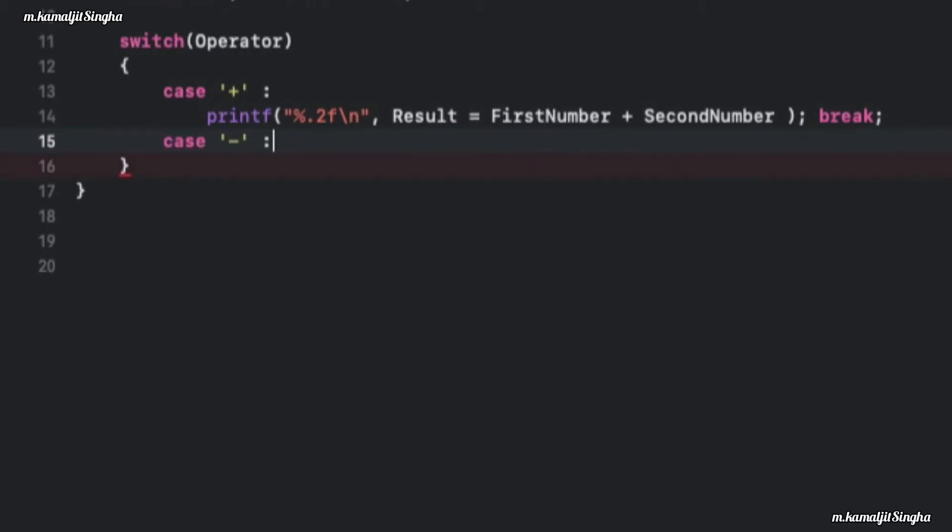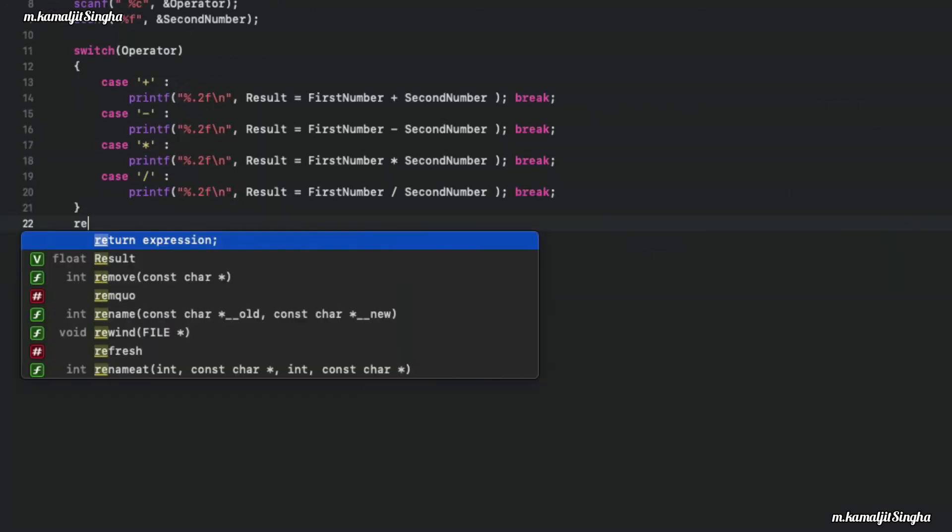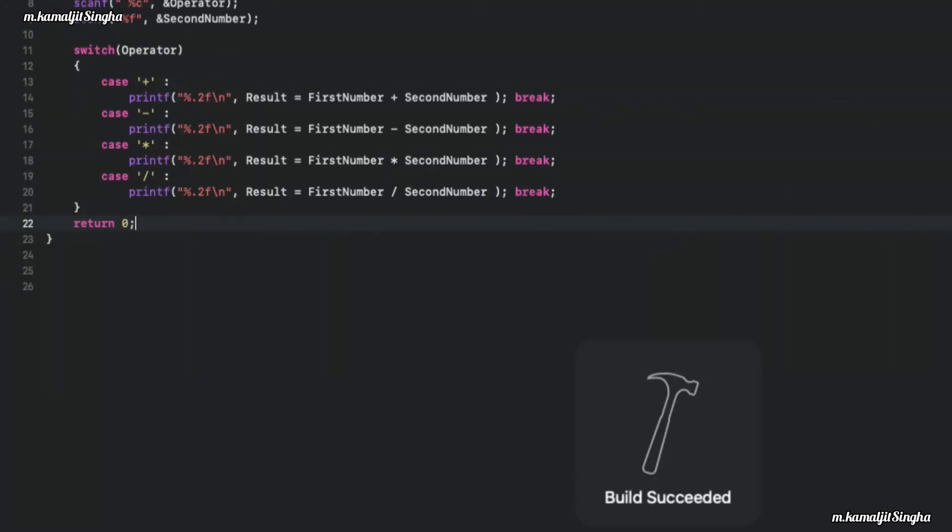If the operator is division sign, print the result of first number divided by second number, then break. Return zero. Let's run this program.